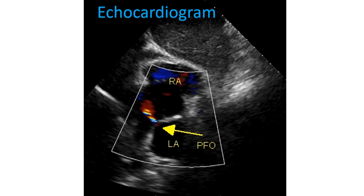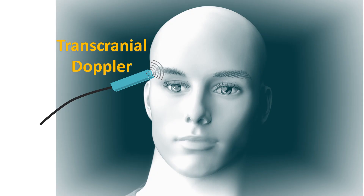PFO can be documented by an echocardiogram. It will also show right-to-left shunting during certain types of strain, indicating the risk of paradoxical systemic embolism. The color Doppler echocardiogram shown here demonstrates a left-to-right shunt across the PFO, most likely due to higher pressure in the left atrium, as discussed earlier.